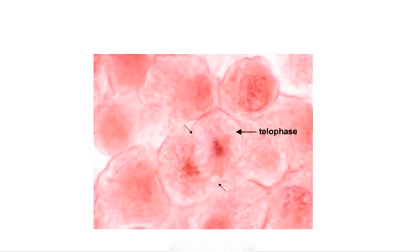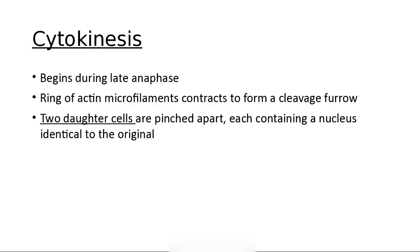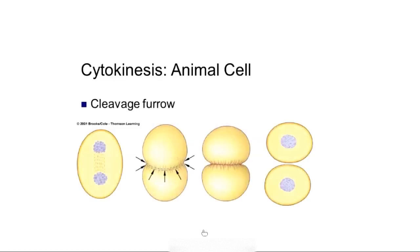In telophase, as seen in this photomicrograph, you have two independent nuclei, but the cell hasn't completely divided yet. Then in cytokinesis, a cleavage furrow — a division furrow made of a protein ring — gets tighter and tighter until it pops apart, giving you two cells.